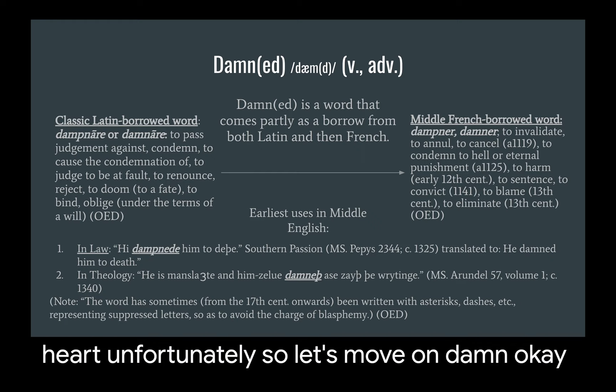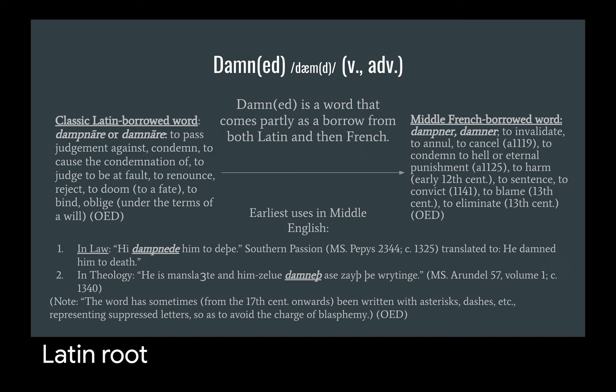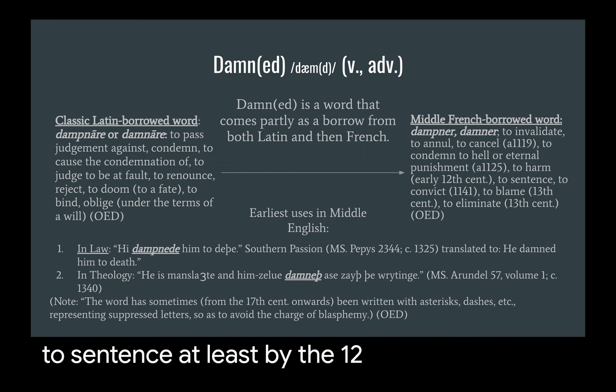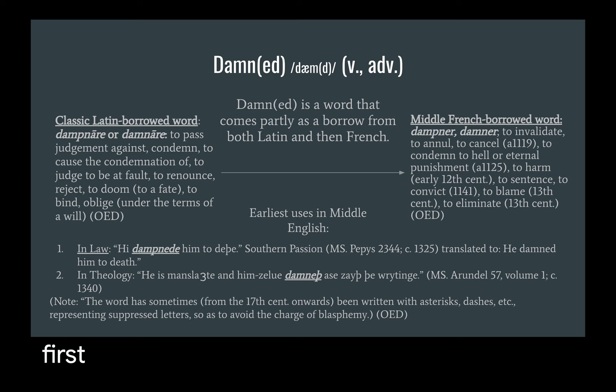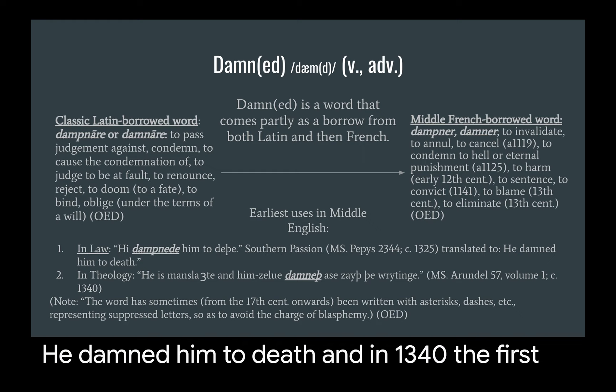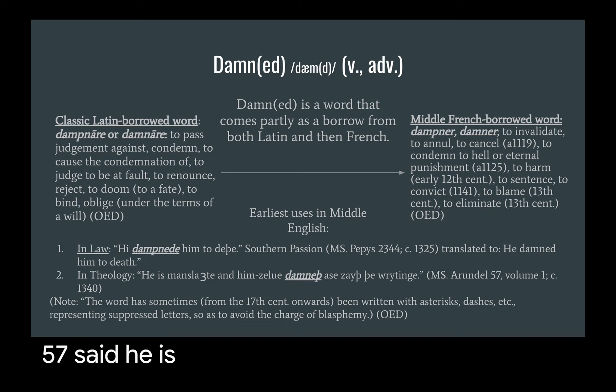Damn. Damn comes from both Latin and French. The Latin root is 'dampnare,' which meant 'to pass judgment against.' The first recorded usage in Middle French was 'dampnare,' which meant 'to sentence' — at least by the 12th century, that's what the Middle French meant. So the first recorded usage in law is from the MS Pepys 2344, saying 'He damned him to death.' And in 1340, the first recorded usage in theology, in the MS Arundel 57, said 'He is manslaught, and him zalu dammeth, as saith the writing.'